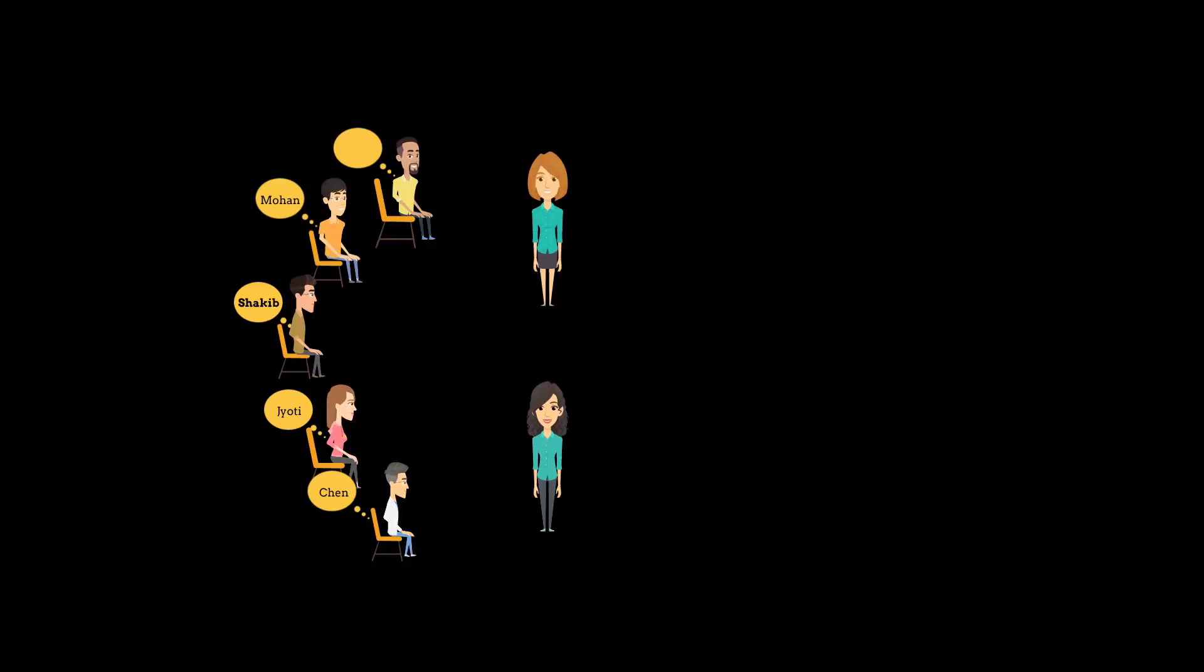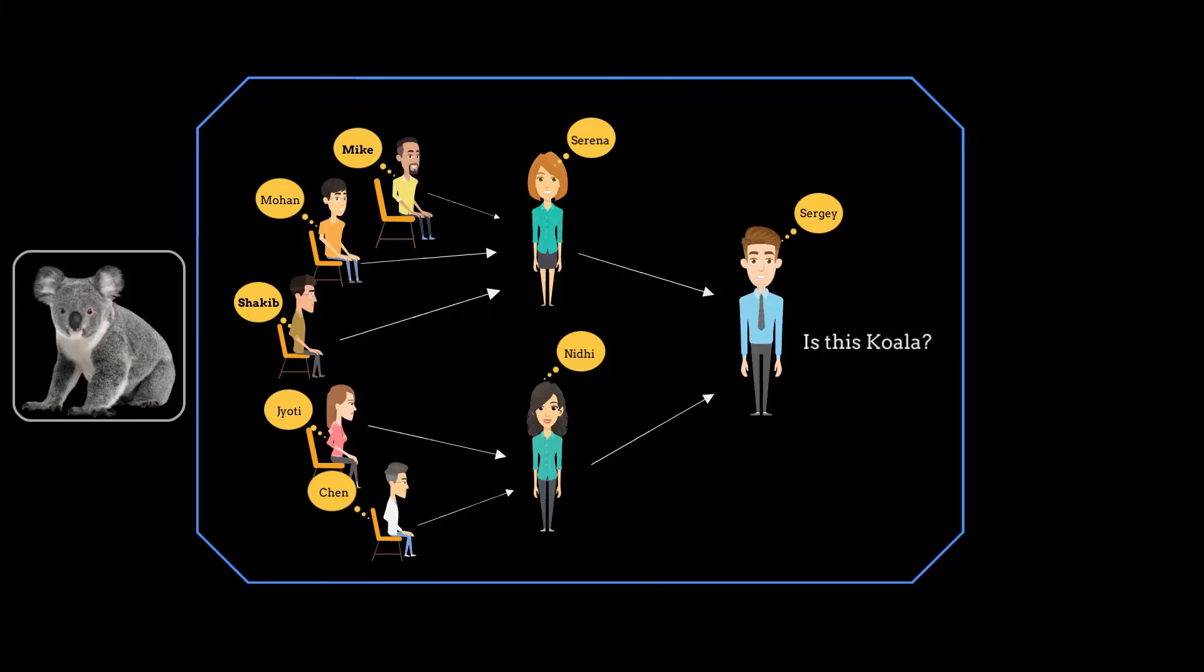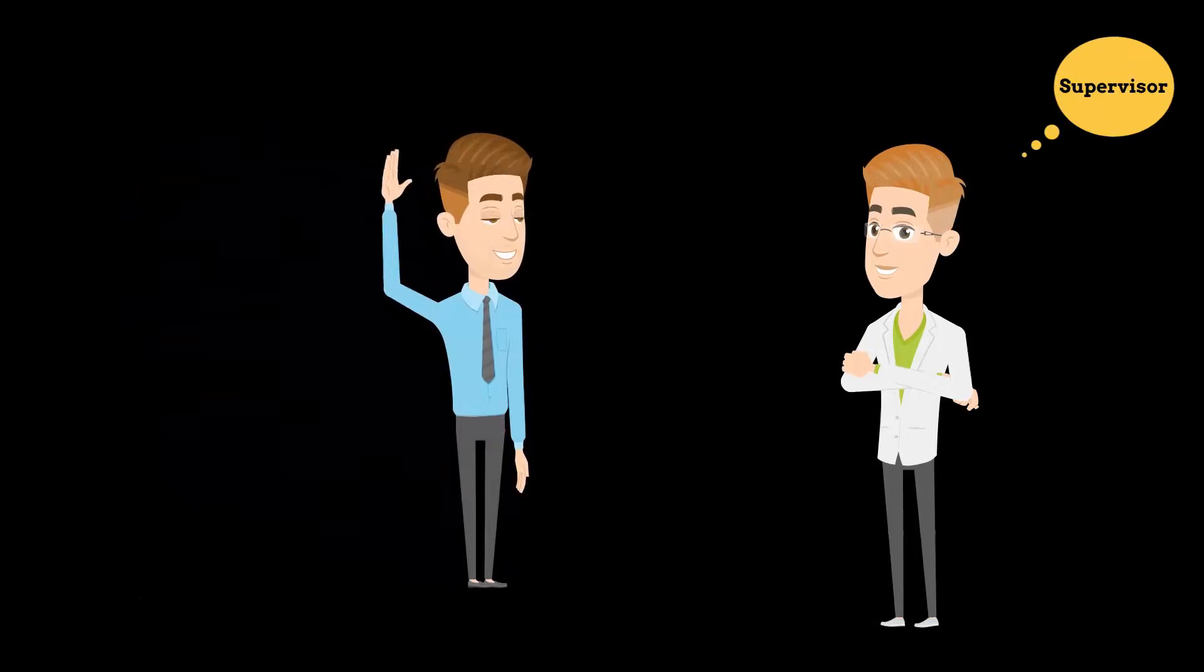Just imagine that these students are not trained right now. You put all of them in a classroom and then you supply an image to this classroom, and they will initially make a random guess. So Mike will randomly guess whether this image has koala's eyes or not, and similarly everyone will make a random guess. Finally, Sergey will tell whether this is koala or not, and once Sergey has a decision, he will go out of the classroom where there is a supervisor standing.